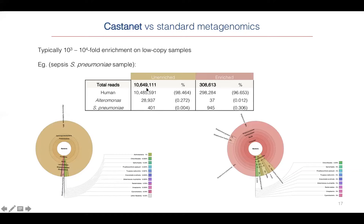In comparison, taking the same sample and doing enrichment, we only need to sequence 300,000 reads — quite moderate. From that smaller number, almost a thousand reads are actually pneumococcus, which is enough to characterize it. Pneumococcus is represented as the red proportion of all bacterial reads, and we now get virtually no kit contaminant reads — they're not consuming our sequencing or drowning out the signal, because we haven't enriched for the contaminant but we have enriched for pneumococcus.